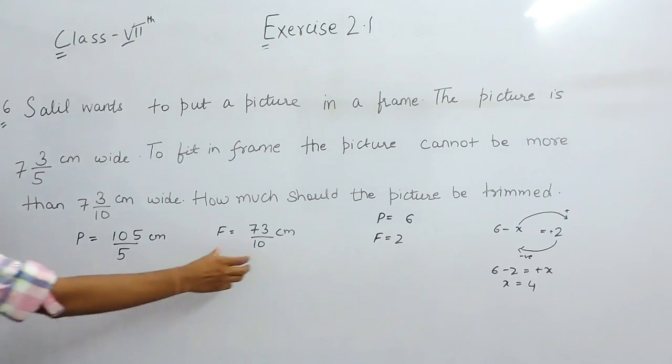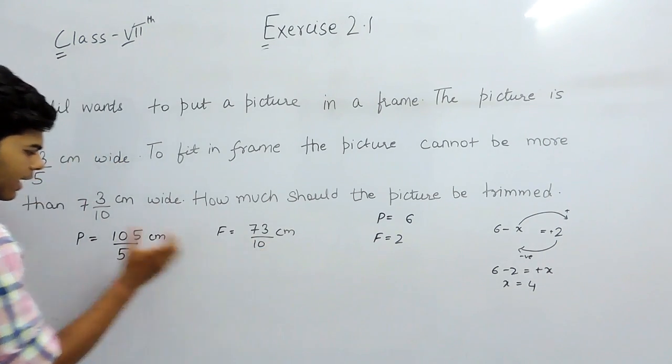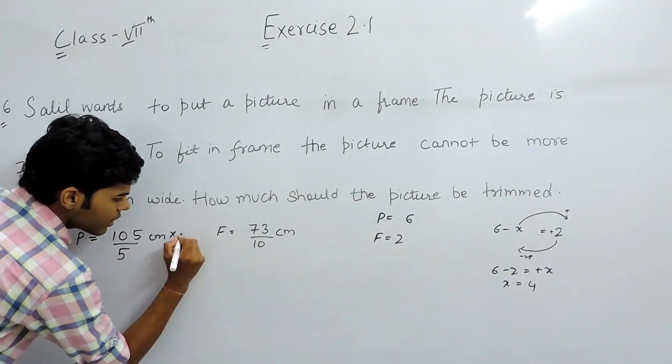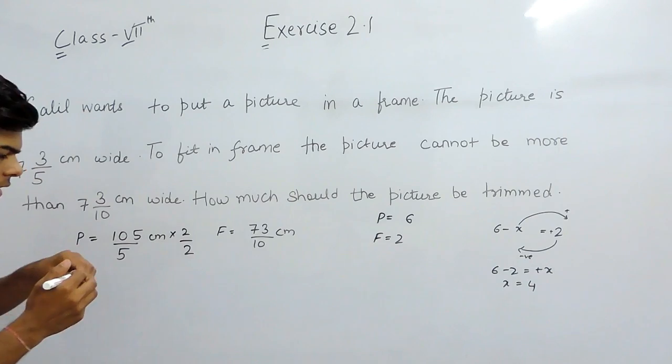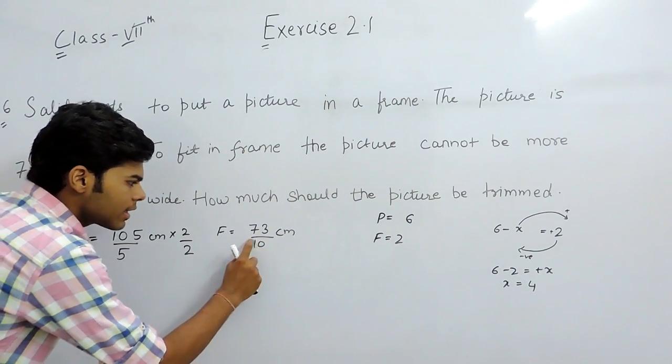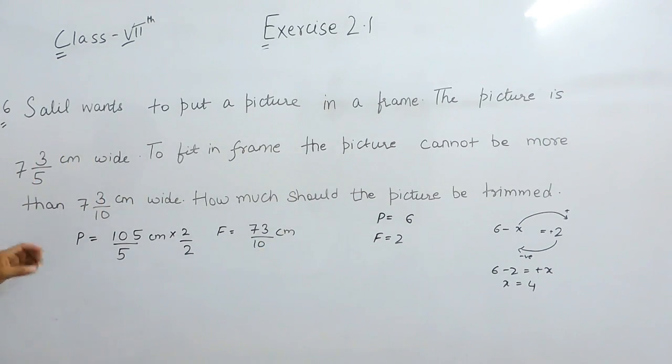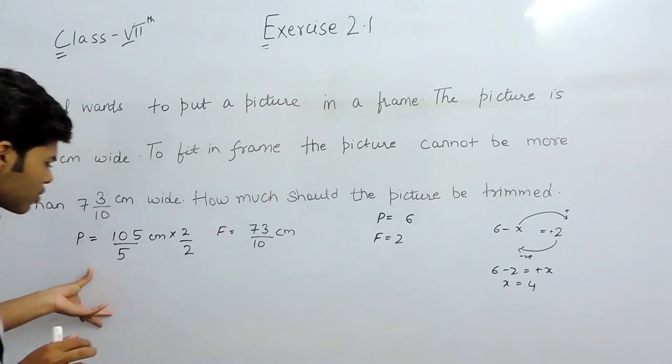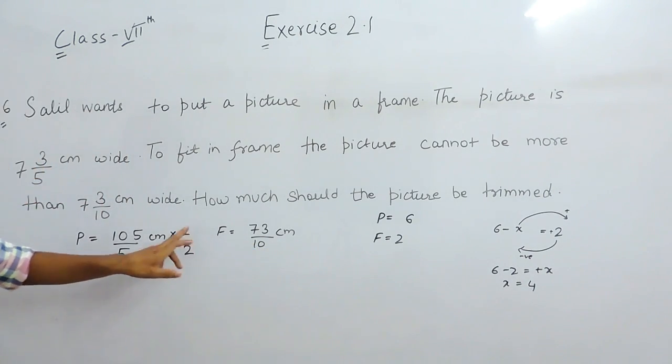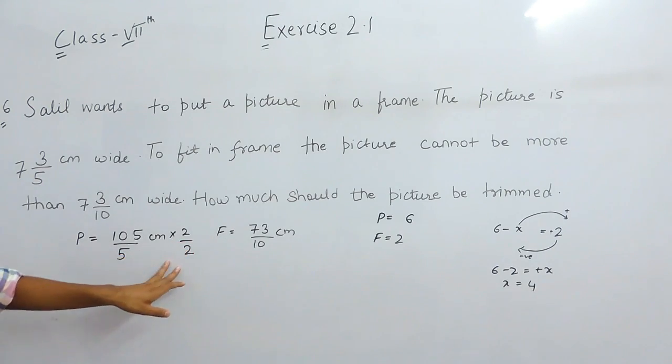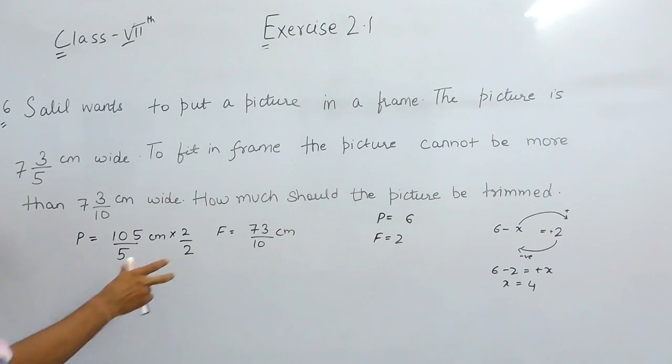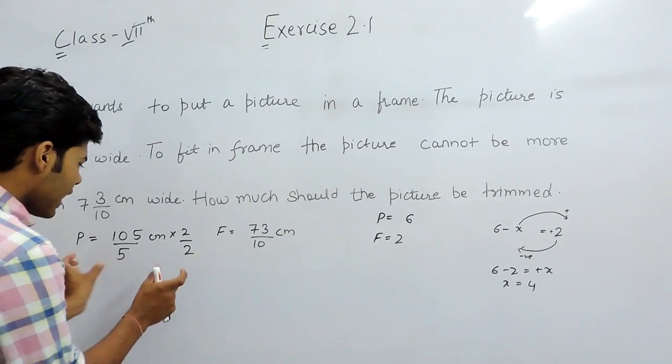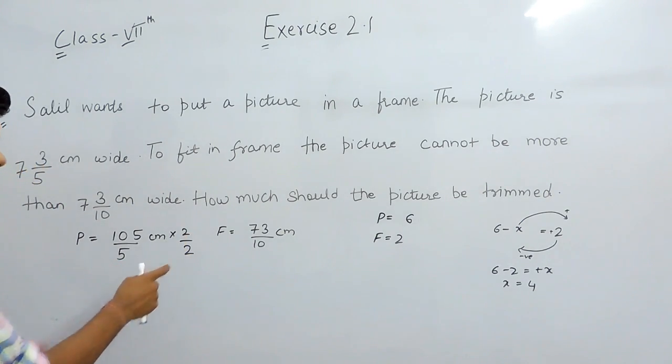LCM will be 10. So we will multiply it with 2 upon 2 to make it 10. We have not multiplied this with LCM because if we multiply it with 10, then our calculation will become a bit longer. But if we multiply it with 2, then you can see that I multiply and divide it with 2, so it means no changes there.